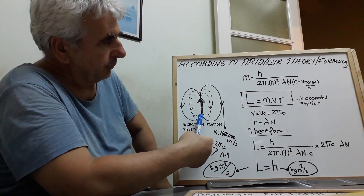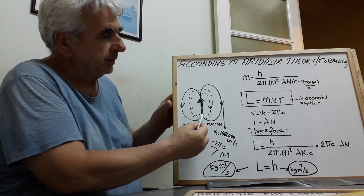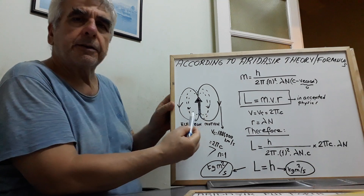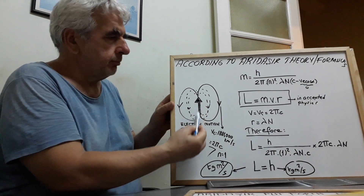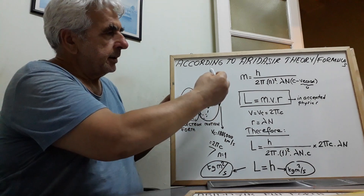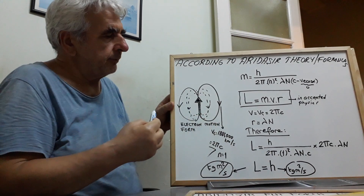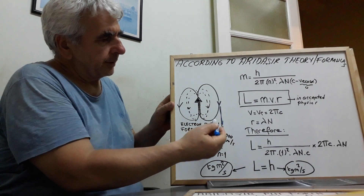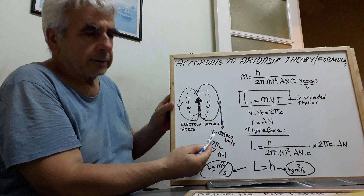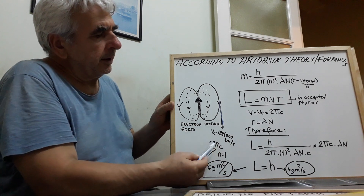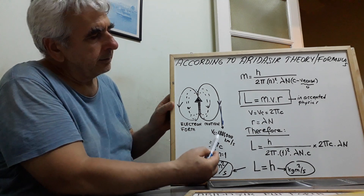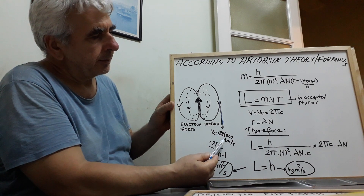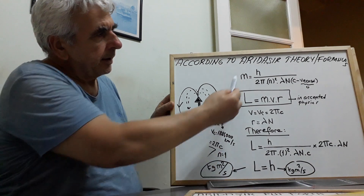This is my electron motion form. Remember, this is the motion arrow, and cycling — remember from my former videos. And here, linear velocity. According to me, linear velocity is 2π·c — 1,884,000 km per second. Remember this.